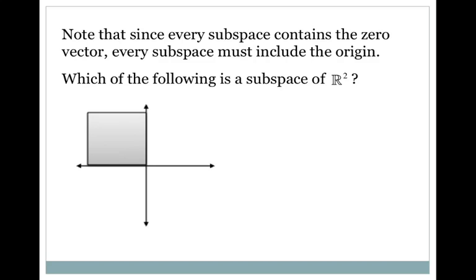Notice that since every subspace contains the zero vector, every subspace must include the origin. This is the easiest place to start when you're checking to see if something is a subspace.